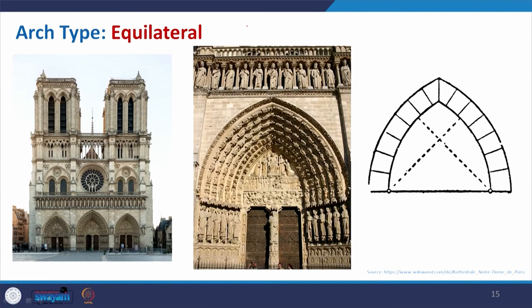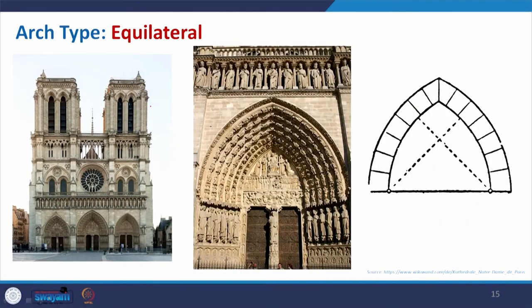Coming to the equilateral arch, which we also found at the Gateway of India in Mumbai. It is similar to the lancet arch, but here the span endpoints are considered to be the centers of the arch, forming this particular structure. Basically, if you draw the circles they create an equilateral triangle, and this arch form is called the equilateral arch. It was mostly used in Byzantine and Gothic architecture.